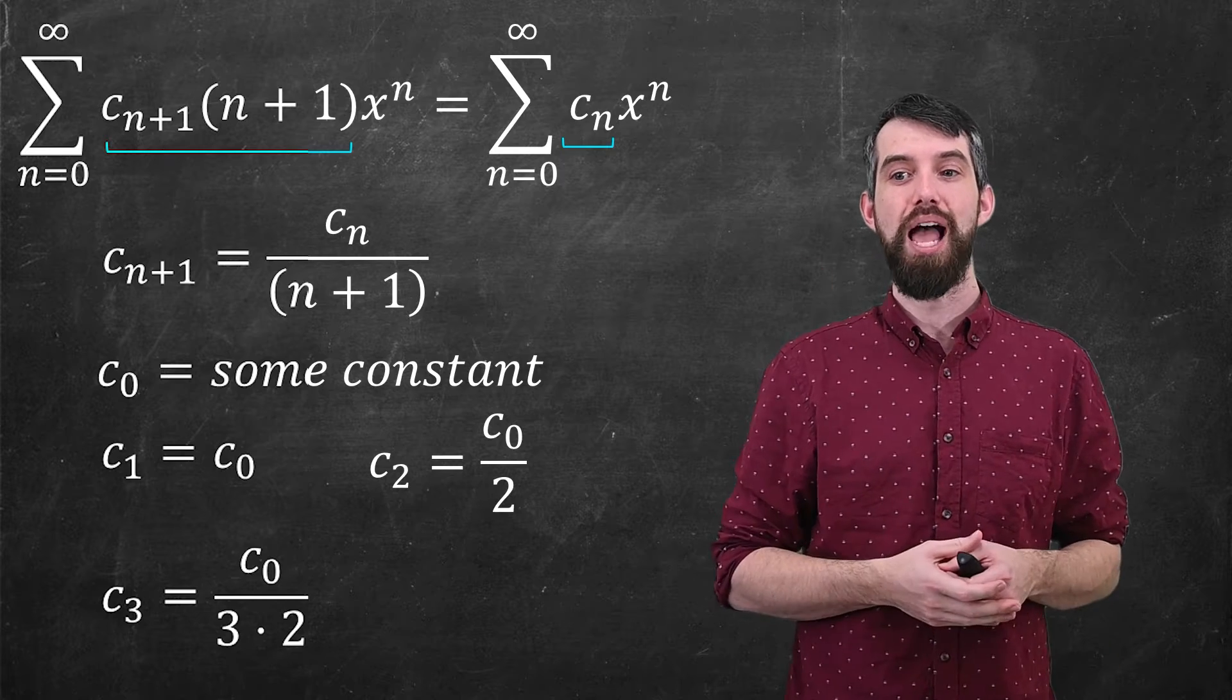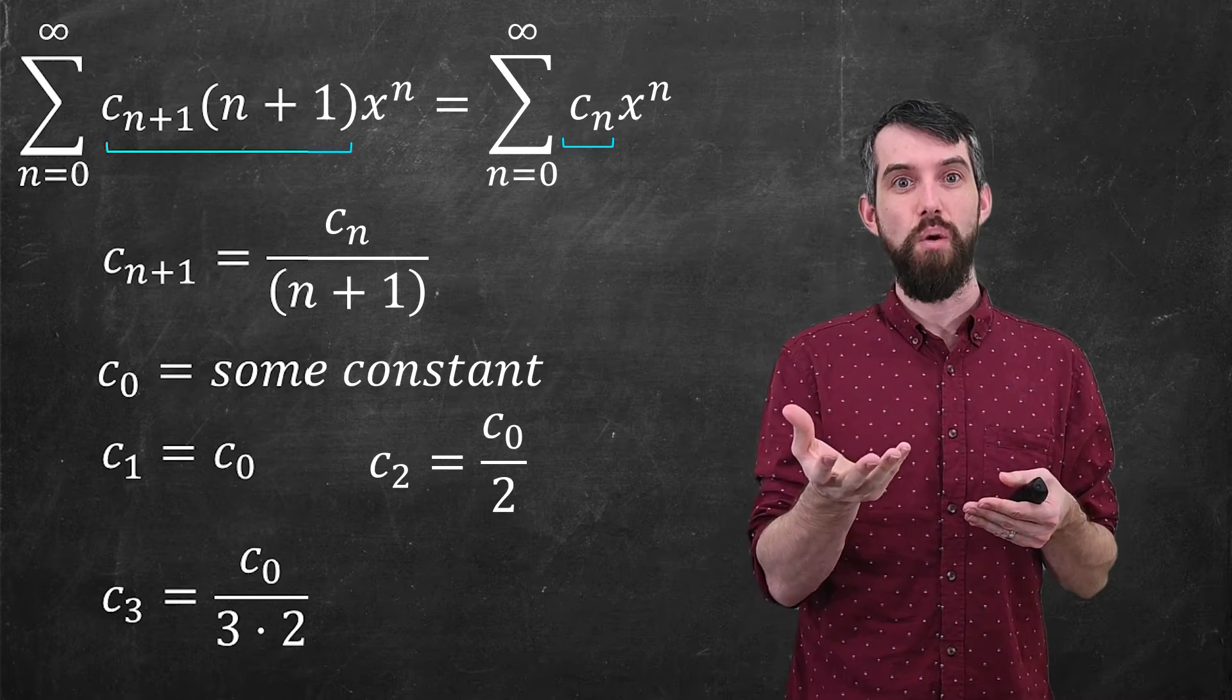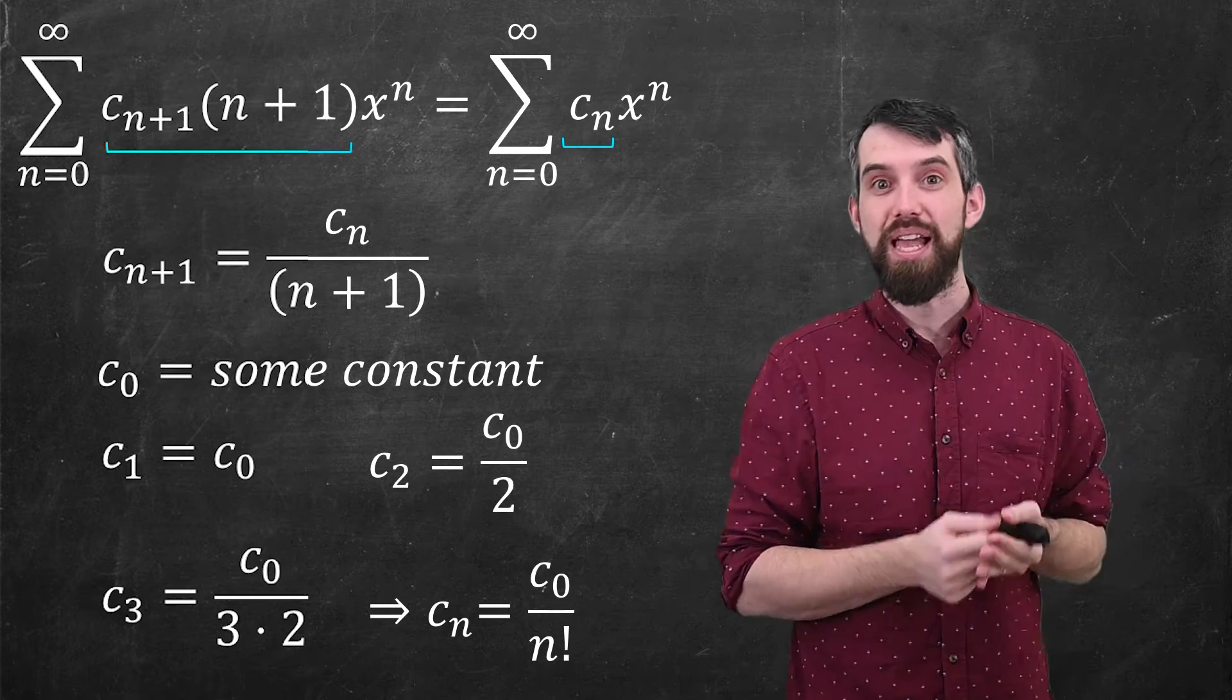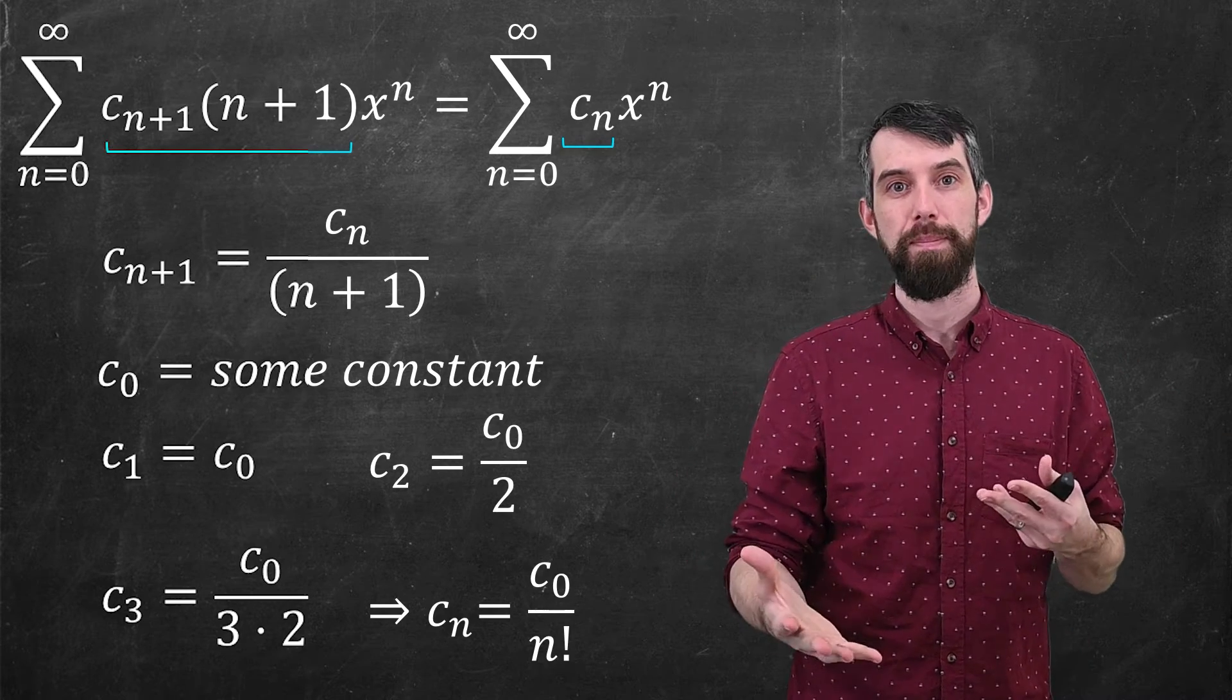And so generally, I'm going to say that c_n, the nth term, is just going to be the initial c_0, but divided by n!. For example, c_5, say, is c_0 divided by 5×4×3×2×1, which is 120.